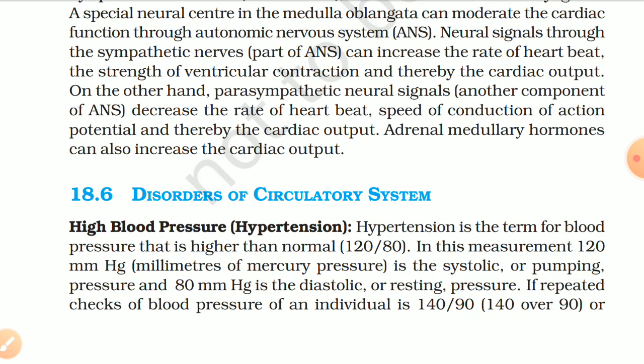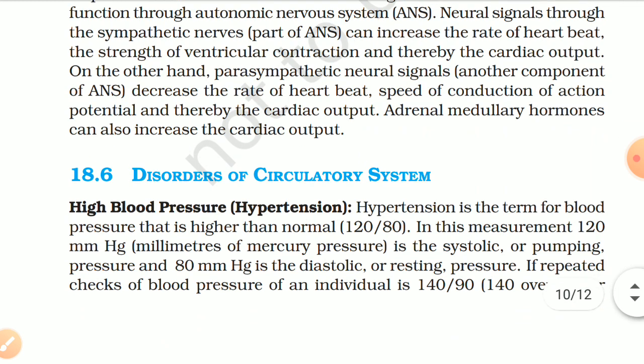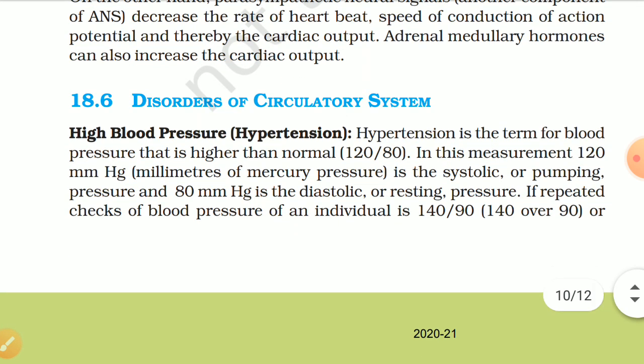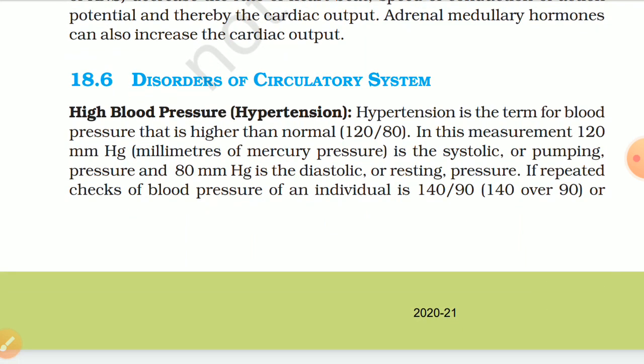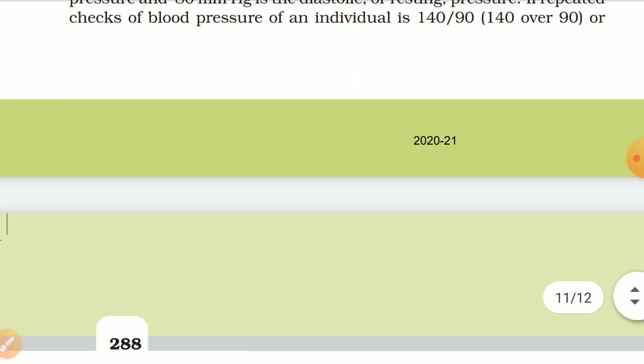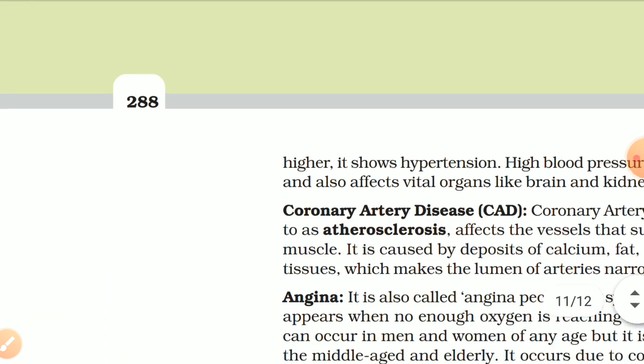18.6 Disorders of Circulatory System. Hypertension (High Blood Pressure). Hypertension refers to blood pressure that is higher than normal (120/80 mmHg). In this measurement, 120 mmHg is the systolic or pumping pressure and 80 mmHg is the diastolic or resting pressure. If repeated checks of blood pressure give a reading of 140/90 or higher, it indicates hypertension. High blood pressure leads to heart disease and also affects vital organs like the brain and kidneys.